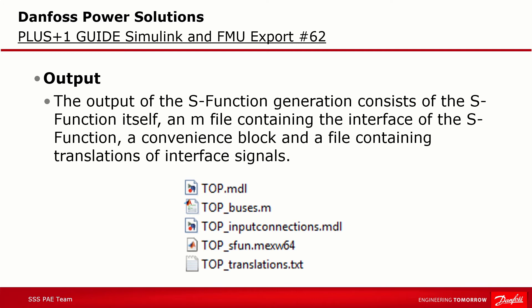The output of the S-Function generation consists of the S-Function itself, an M-file containing the interface of the S-Function, a convenience block, and a file containing translations of interface signals. Bus interface signals and hardware inputs and outputs containing characters that are not allowed in C identifiers will be translated automatically. All translations will be presented in a text file after the conversion.